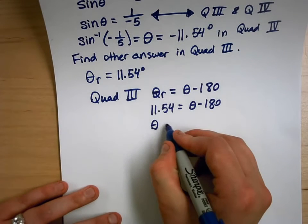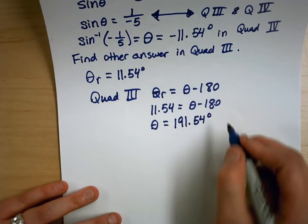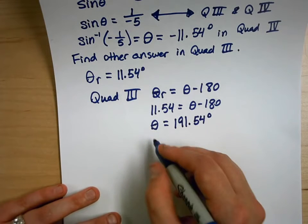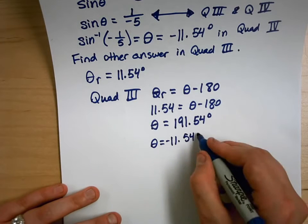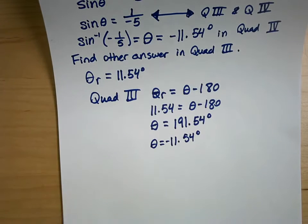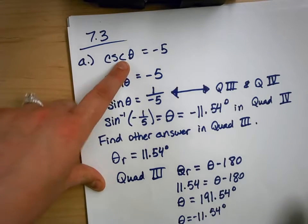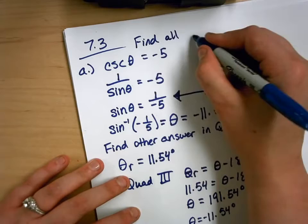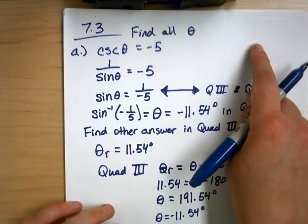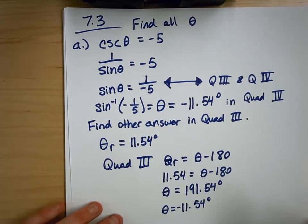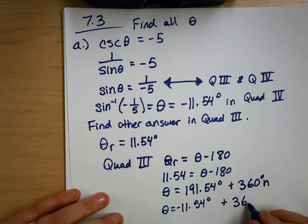So 11.54 equals theta minus 180, which means theta equals 191.54 degrees. My other theta equals negative 11.54 degrees. Since the problem asks to find all values — not restricting theta to just between 0 and 360 — I'm going to tag on 360 degrees times n to both of these answers.